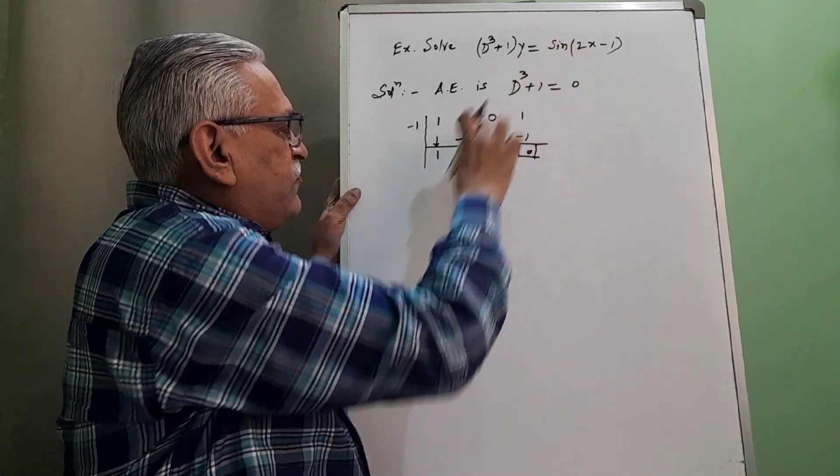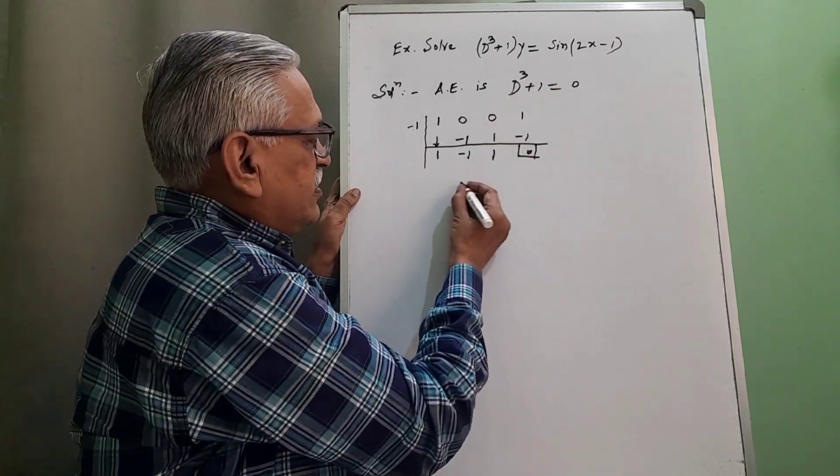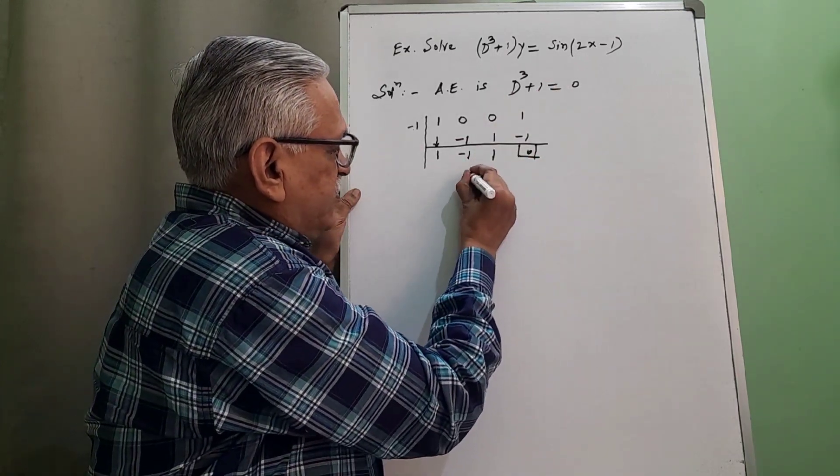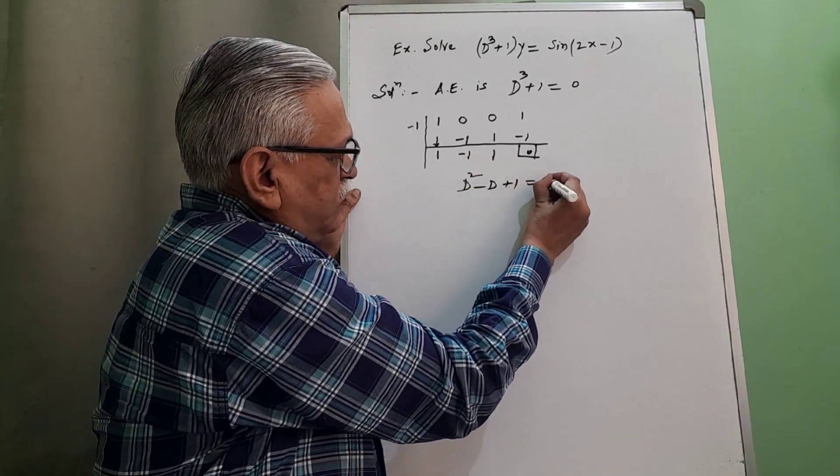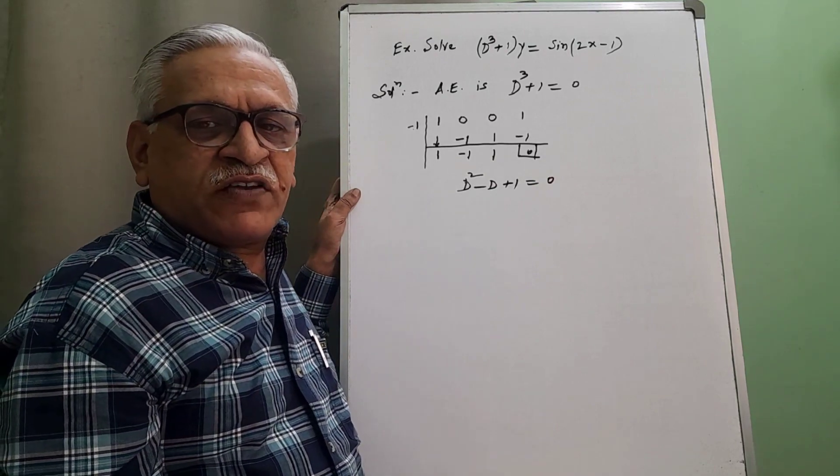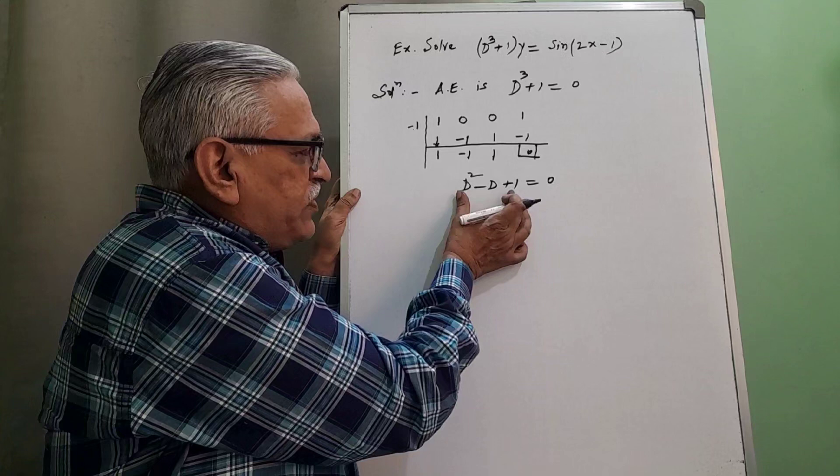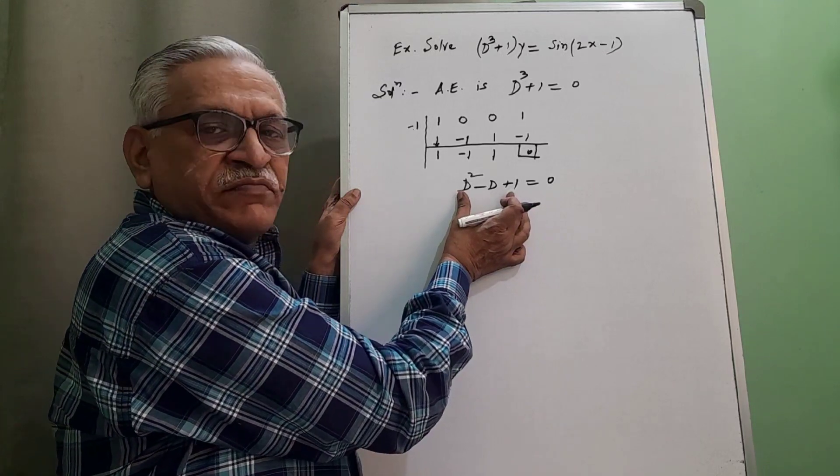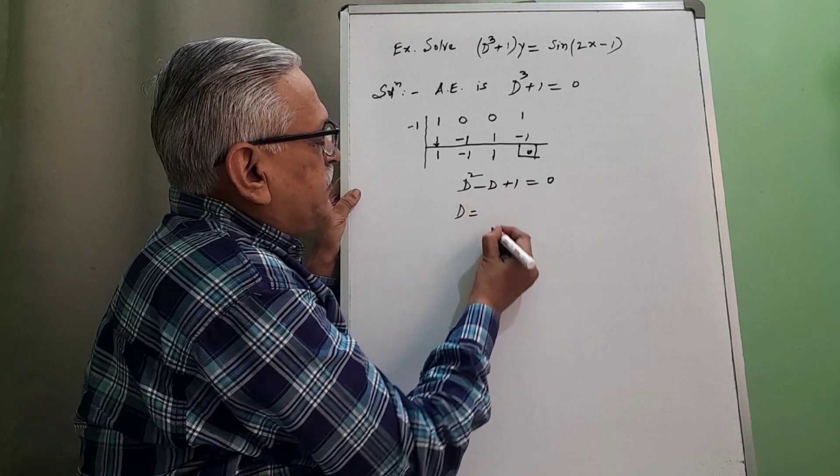If one factor is removed from this d cubed plus 1, the remaining factor is d square minus d plus 1 equals to 0. A quadratic factor, a quadratic equation. And then solving this quadratic equation for d by formula.